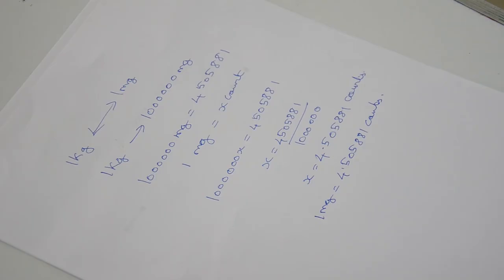Precision can be precisely increased when compared to the existing system. On calibration of the count considering mass, we get a range from 1 kg to 1 mg. On calculating for single mg, it is 4.505881 counts.